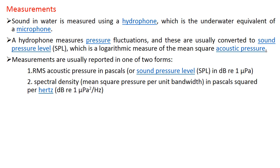Measurements: Sound in water is measured using a hydrophone, which is the underwater equivalent of a microphone. A hydrophone measures pressure fluctuations, which are usually expressed as sound pressure level — the logarithm of the mean square acoustic pressure. Measurements are recorded in two forms: root mean square (RMS) acoustic pressure in Pascals or sound pressure level in dB re 1 micro-Pascal, and spectral density — mean square pressure per unit bandwidth in Pascals squared per hertz.